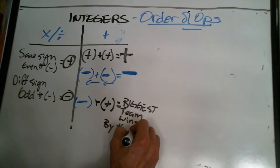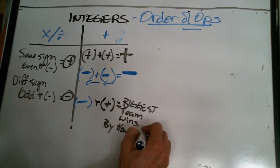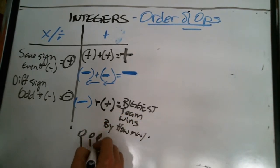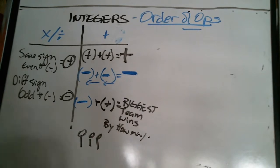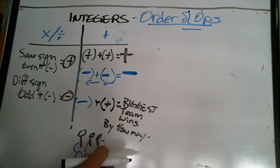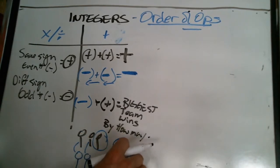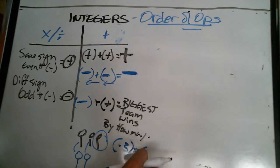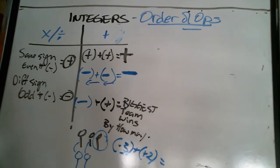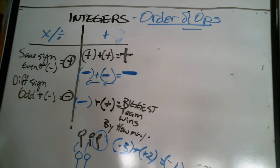Then you have to find out by how many. Remember, if I have three boys and two girls, these two pair up and I have one boy left over. So if this is negative three plus positive two, the boys have the bigger team — how many are they bigger by? By one. The answer is going to be negative one.